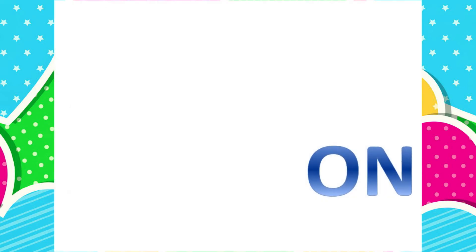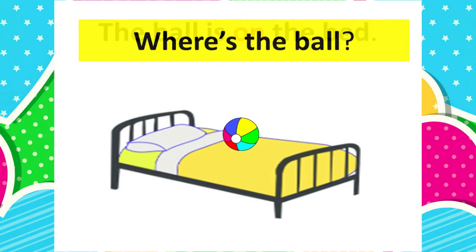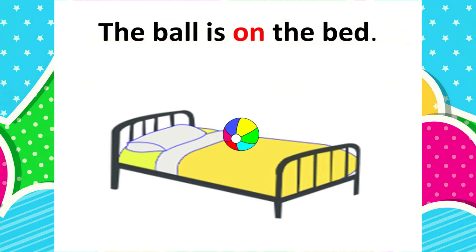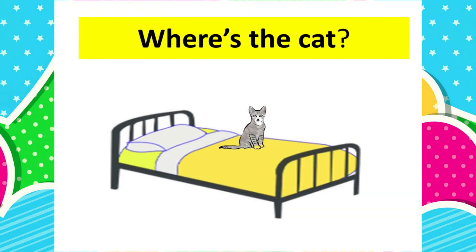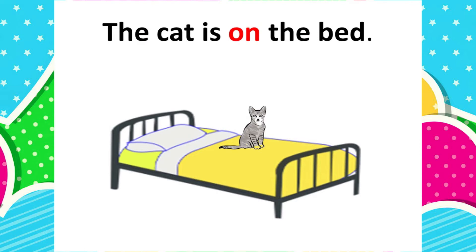On. Na. Where's the ball? The ball is on the bed. Lopta je na krevetu. Where's the cat? The cat is on the bed. Mačka je na krevetu.